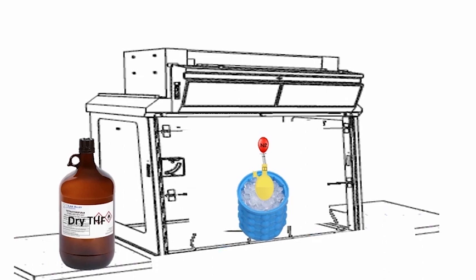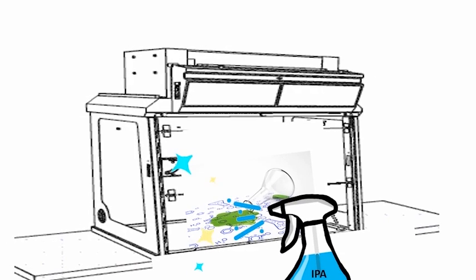If somehow spillage of lithium aluminum hydride happens when putting the reaction, immediately quench it with isopropyl alcohol, IPA. You should keep the IPA nearby so that if any spillage happens, you can immediately take action and quench it.